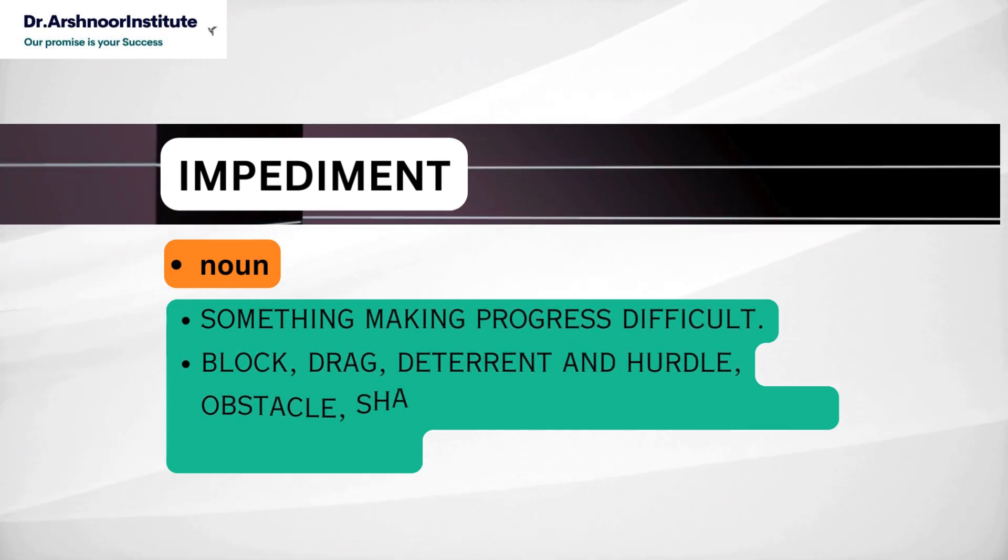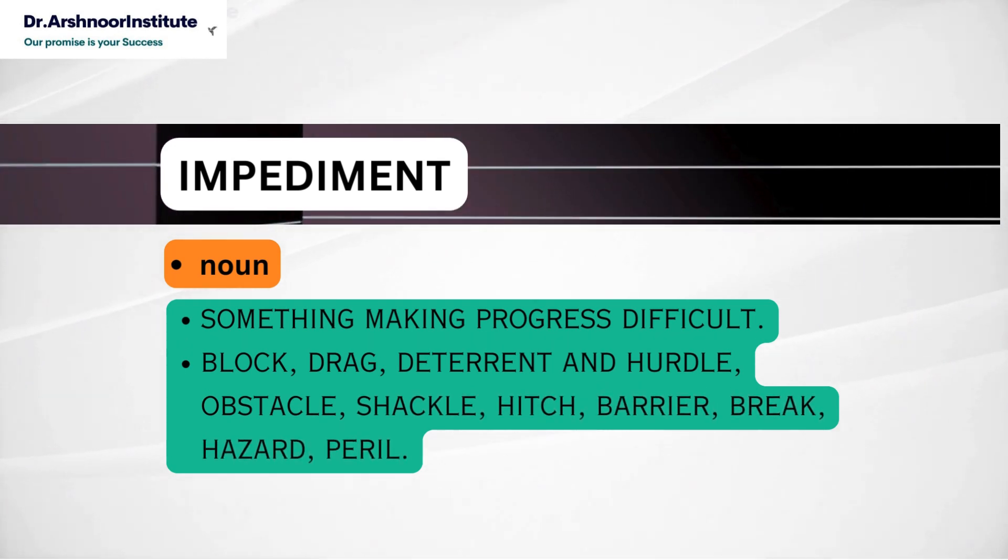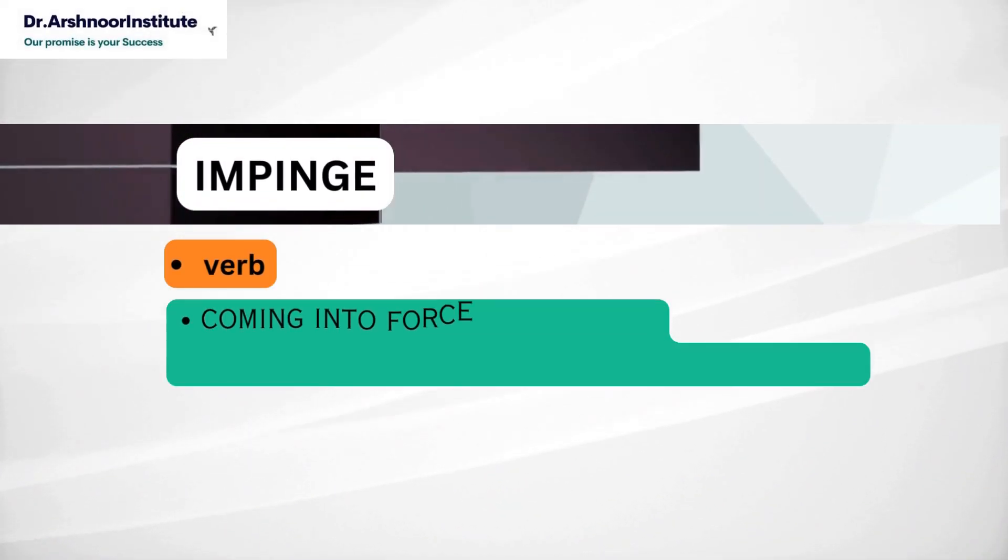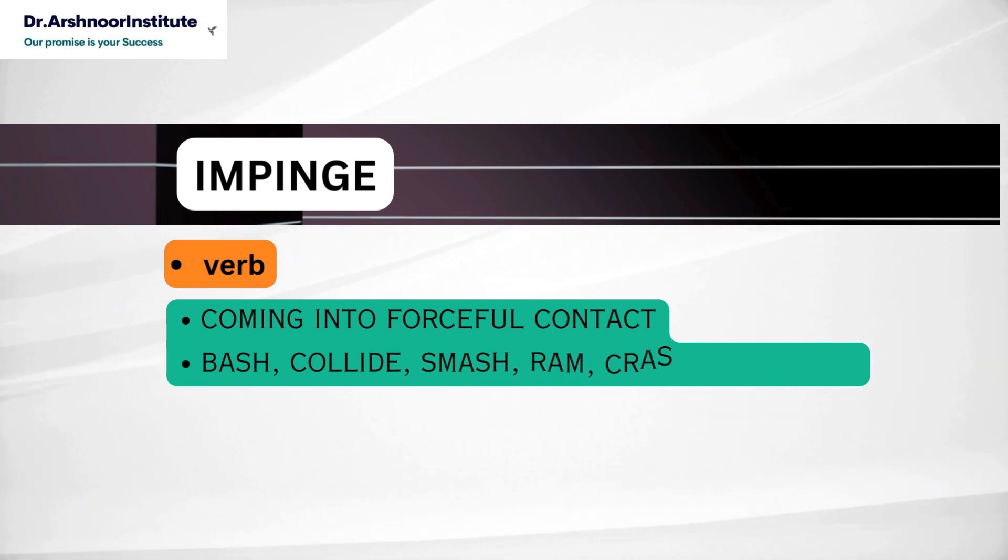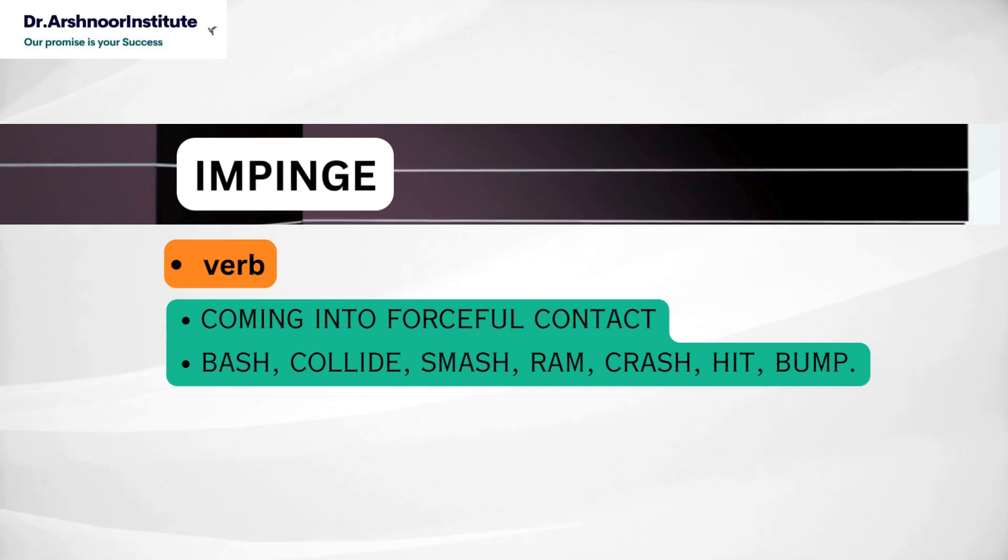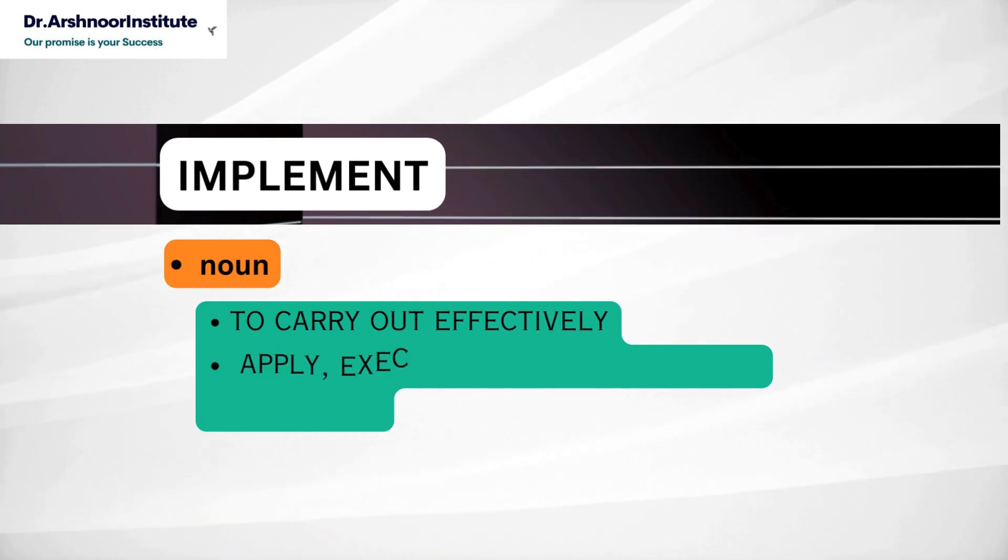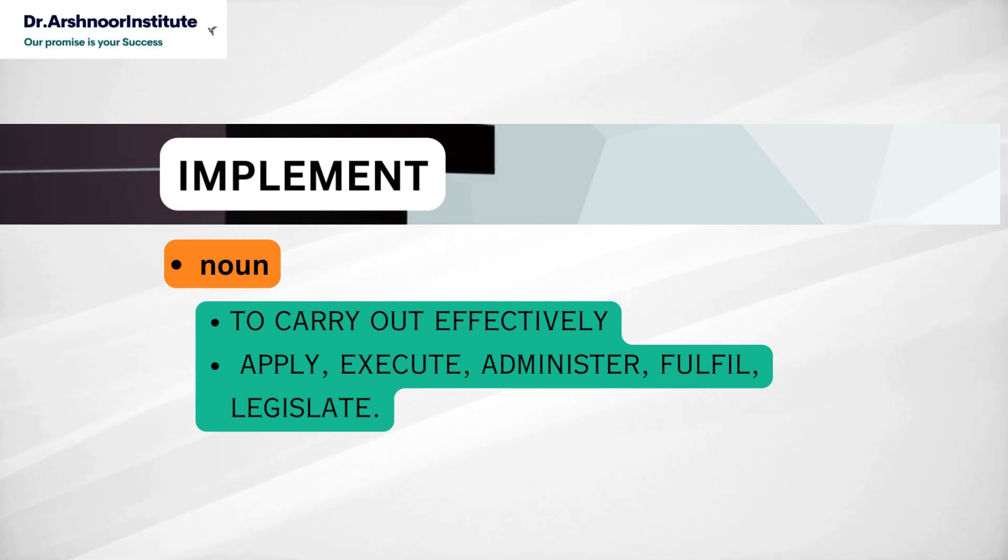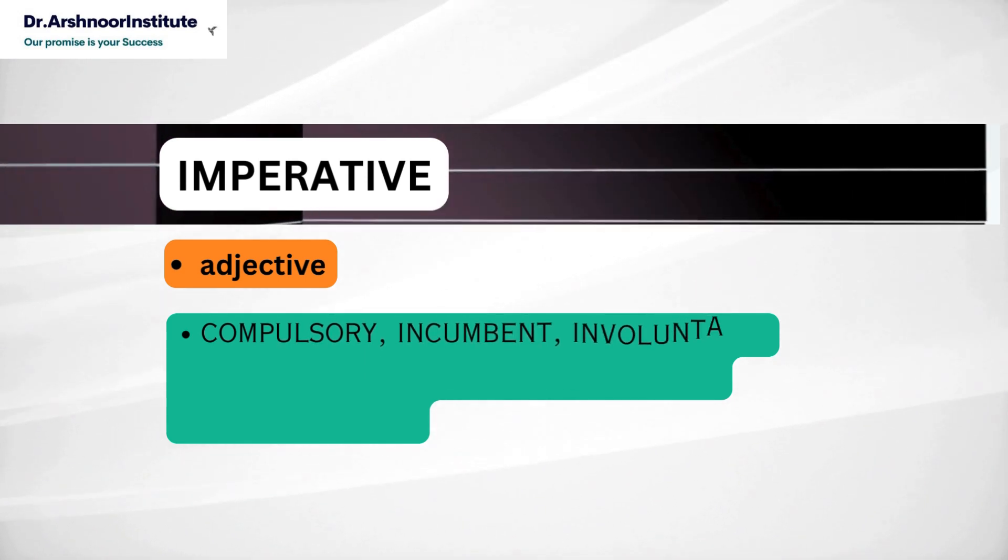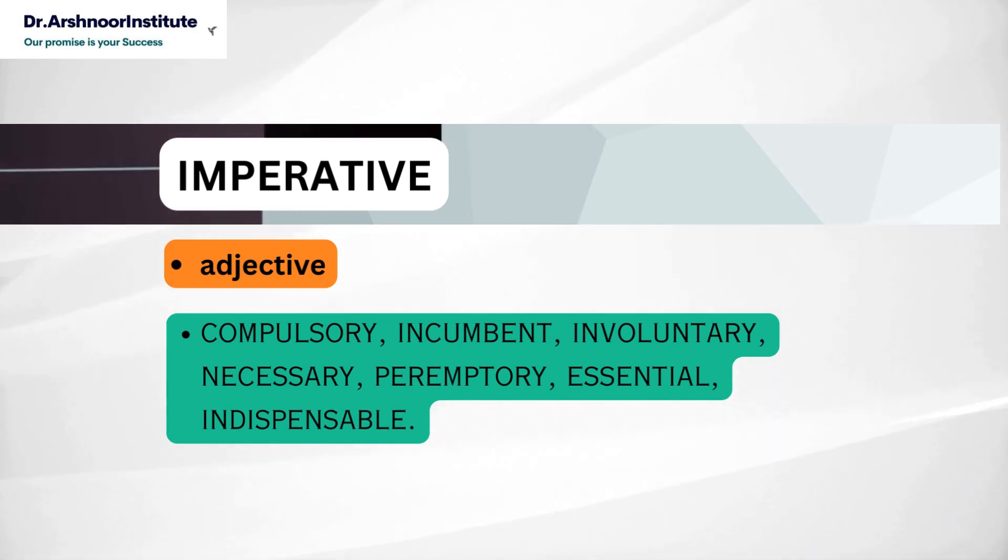Next word is impinge. It's a verb. It means coming into forceful contact and the synonyms are bash, collide, smash, ram, crash, hit, bump. Next word is implement and this is a noun. It means to carry out effectively. Synonyms are apply, execute, administer, fulfill, legislate. Next word is imperative. It's an adjective. It means compulsory, incumbent, involuntary, mandatory, necessary, preemptory, essential, indispensable.